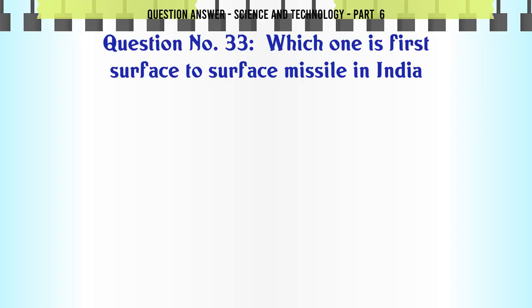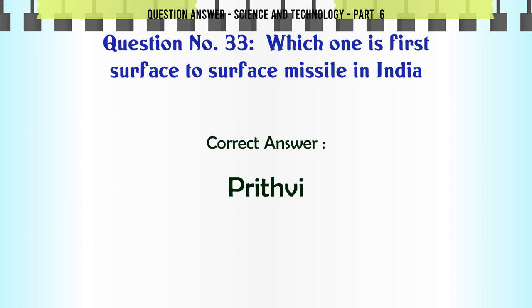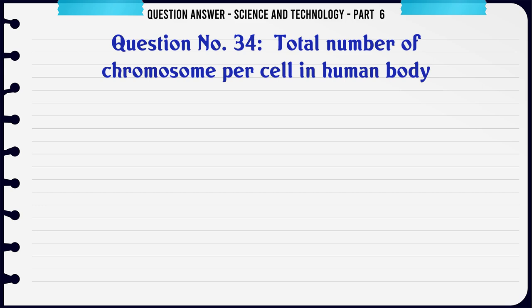Which one is the first surface-to-surface missile in India? A. Akash. B. Trishul. C. Nag. D. Prithvi. The correct answer is Prithvi.